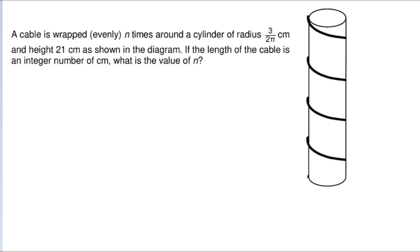Hello friends, this is Coach Veer again on my YouTube channel. I have a difficult question today. A cable is wrapped evenly n times around a cylinder having a radius of 3/(2π) centimeters and height 21 centimeters, as shown in the diagram. If the length of the cable is an integer in centimeters, what is the number of turns n? Please try it and pause the video.